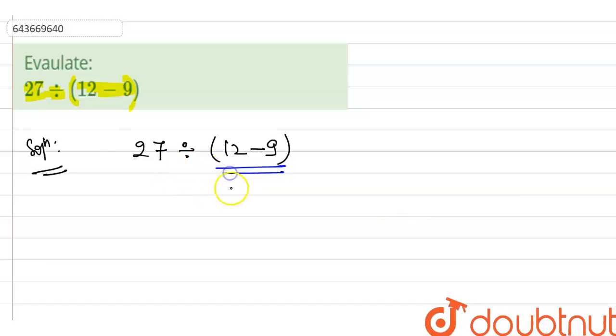As we see there is a bracket, so first of all we will solve this bracket, then we will solve this division. Okay, so 27 divided by (12 minus 9), what will this be? It will be equal to 3.